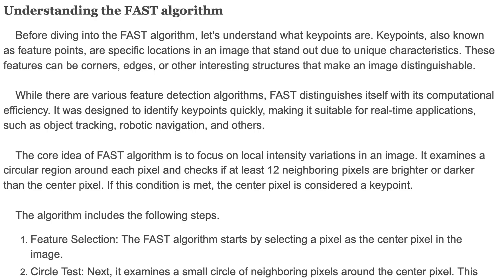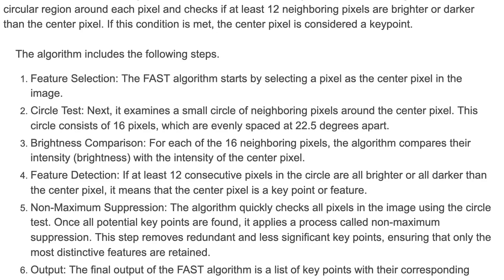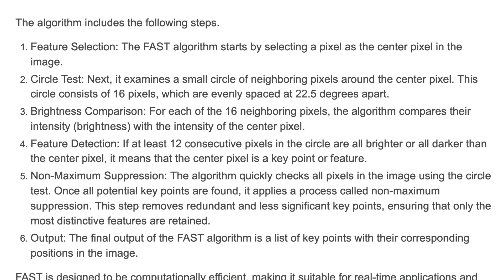The core idea of the FAST algorithm is to focus on local intensity variations in an image. It examines a circular region around each pixel and checks if at least 12 neighboring pixels are brighter or darker than the center pixel. If this condition is met, the center pixel is considered a key point. The algorithm starts by selecting a center pixel, then examines a small circle of 16 neighboring pixels, which are evenly spaced at 22.5 degrees apart.